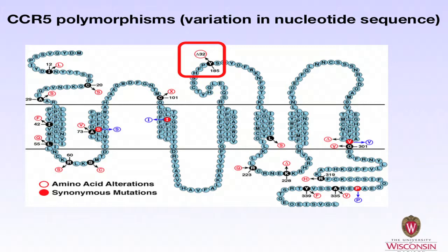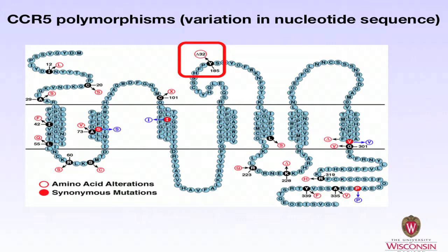We know of many polymorphisms in CCR5 — polymorphisms are simply variations within the nucleotide sequence. There are a number of these polymorphisms throughout the CCR5 gene, shown here in different colors and circles. Some affect amino acid sequences and some don't. The one I want to highlight is the delta 32 mutation in the middle of the gene. This delta 32 mutation produces a non-functional CCR5 protein. The frequency of this mutation in the population is about 10%, and the frequency of those who are homozygous for this mutation is about 1%.